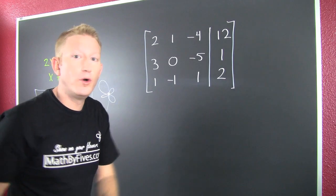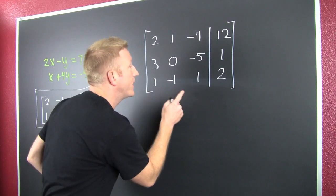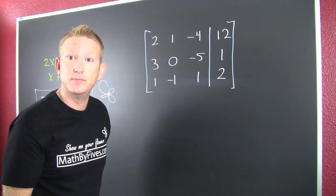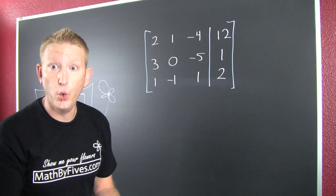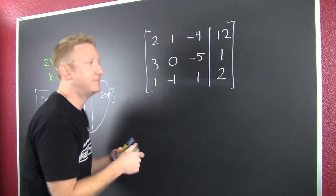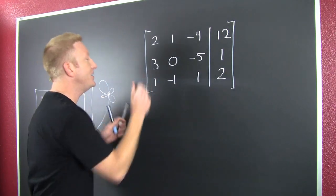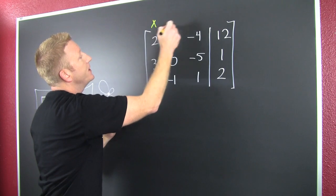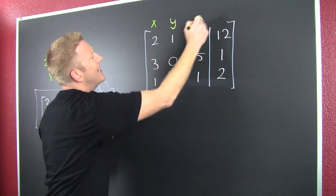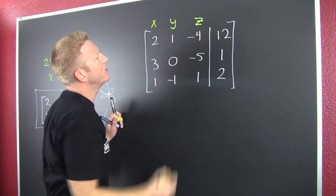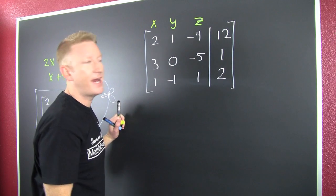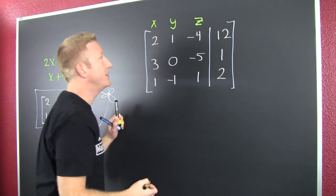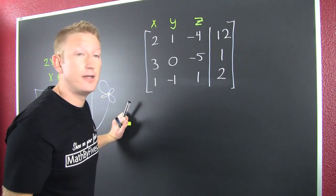Wait — one more. What if I wanted to go from the augmented matrix back to the system? I'm going to have an x category, a y category, and a z category, augmented with my answers. This is the equal sign.